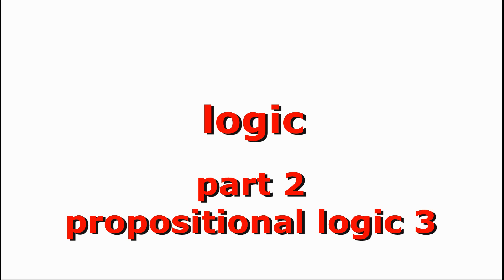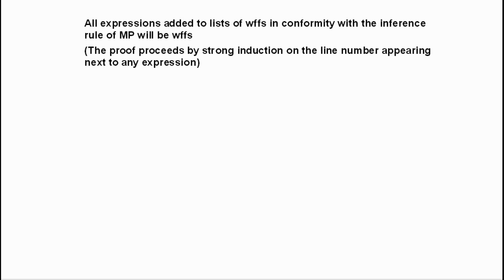The last presentation in this series on the propositional calculus contained a proof by strong induction of the metatheorem that all wffs are balanced — that is, they contain an equal number of left-hand and right-hand parentheses. In the written materials available through our website, there is also a proof that all expressions added to lists of wffs in conformity with the inference rule of modus ponens will themselves be wffs, proved by strong induction on the line number.